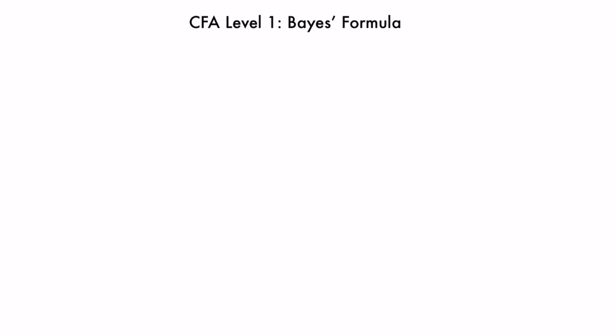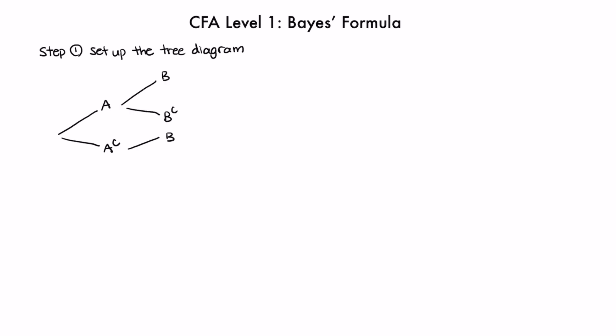Bayes' formula can be complicated, but it can be taught in three simple steps. Step one is to set up the tree diagram. Always start with the general tree diagram: A or AC happens, and from each of those, it branches off to B or BC.